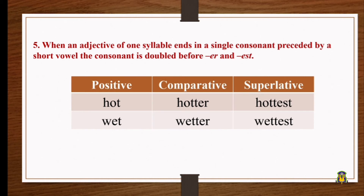A syllable is a single unit of speech — it can be a whole word or one part of a word. For example, 'sad' is one syllable; 'water' has two syllables. For one-syllable words like 'hot,' the consonant t is doubled to give 'hotter' in the comparative and 'hottest' in the superlative. Similarly, 'wet' becomes 'wetter' and 'wettest.'